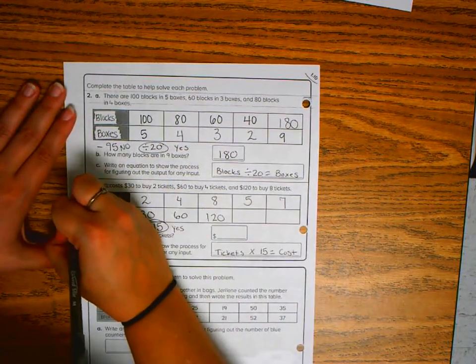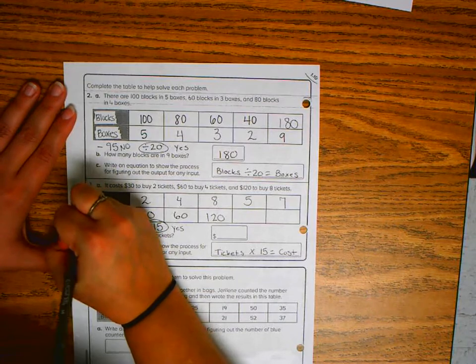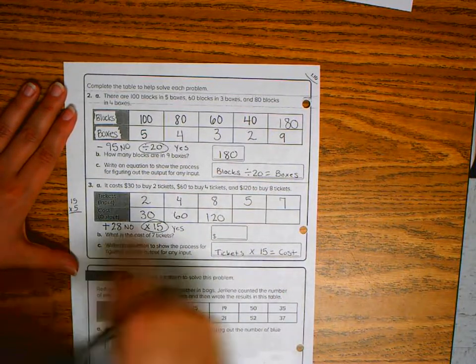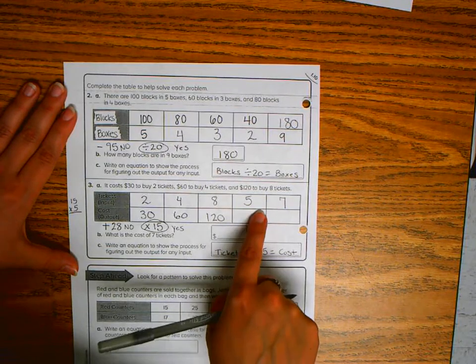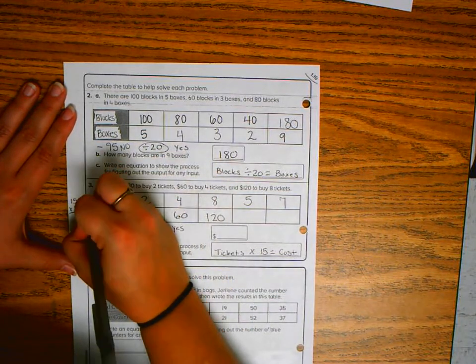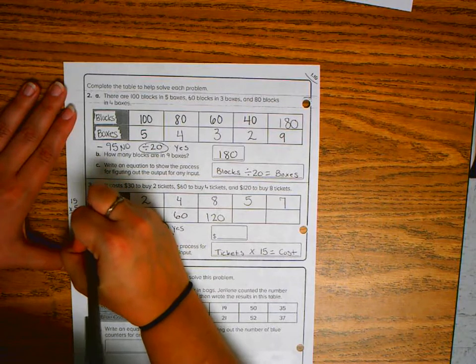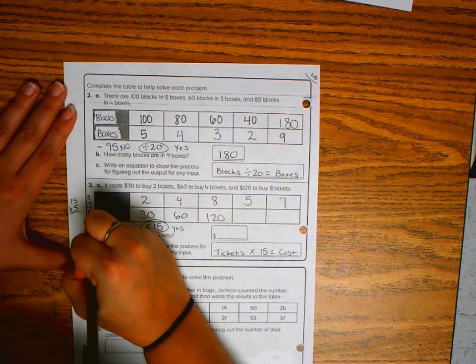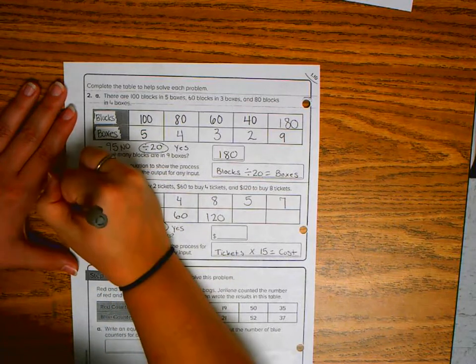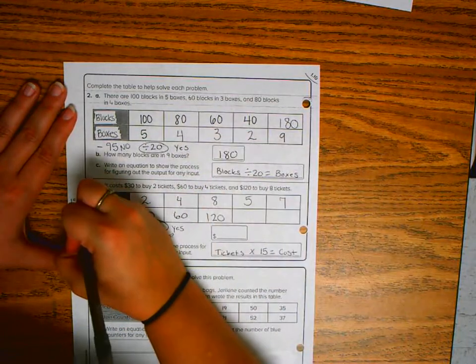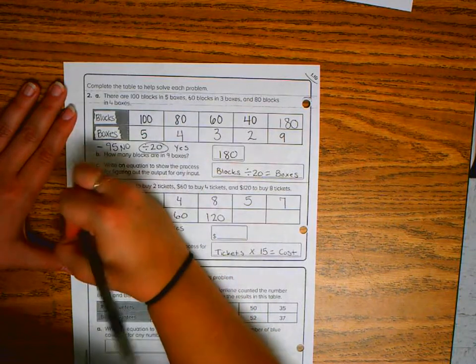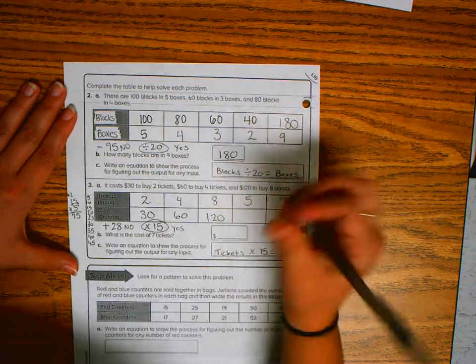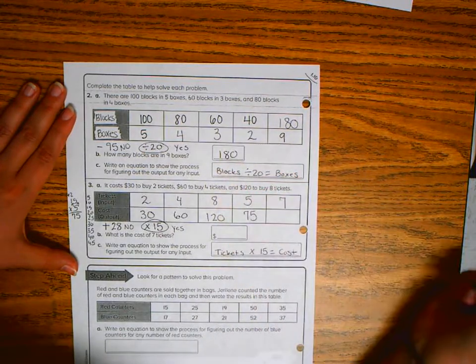Now I multiply fifteen times five to fill in the cost of how much I spent for five tickets. So I write my multiples of five: five, ten, fifteen, twenty, twenty-five, thirty, thirty-five, forty, forty-five. Five times five is twenty-five, so I leave the five and carry the two. Five times one is five plus two is seven. So I know five tickets cost me seventy-five dollars.